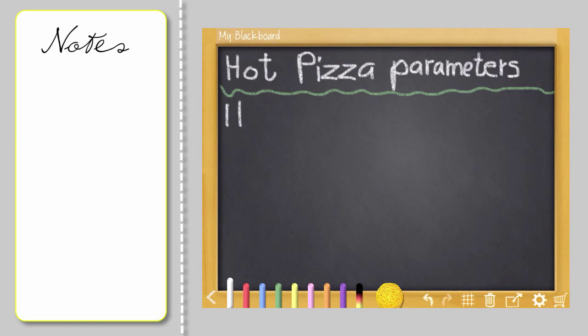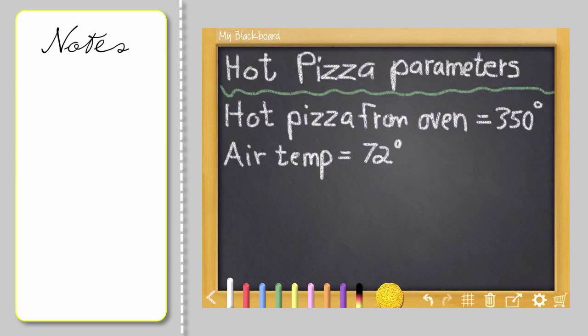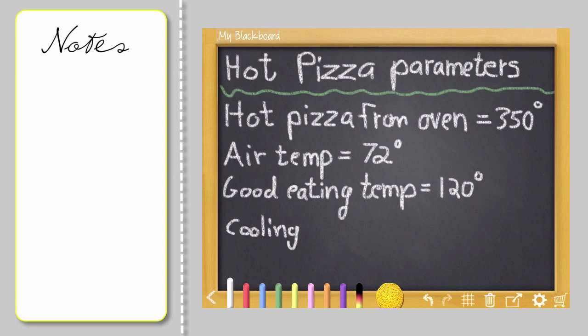I said this was a fill in the blank kind of formula, so let's do just that. Hot pizza, fresh from the oven, let's say 350 degrees Fahrenheit. The surrounding air temperature is a comfy 72 degrees. The roof of your mouth will scald if you chomp down on 350 degree pizza. But 120 degrees is just right. Recommended by Goldilocks. Let's say that through years of research, you've determined that the cooling rate of a slice of pizza is negative 0.117. That's all we need.